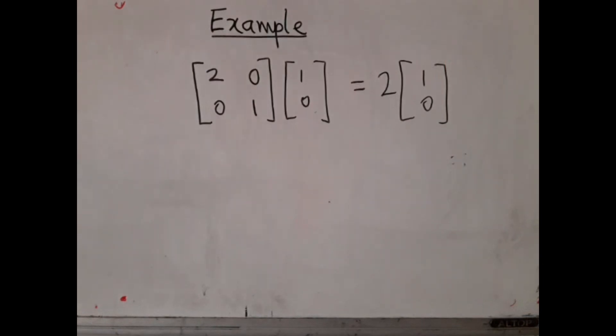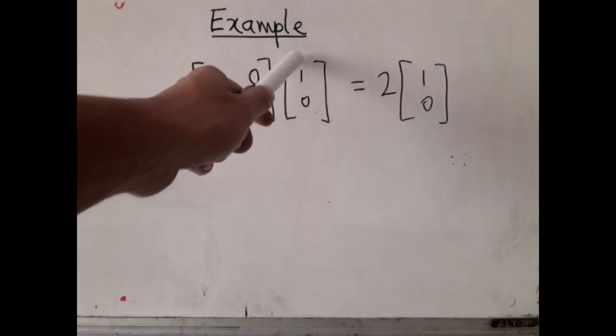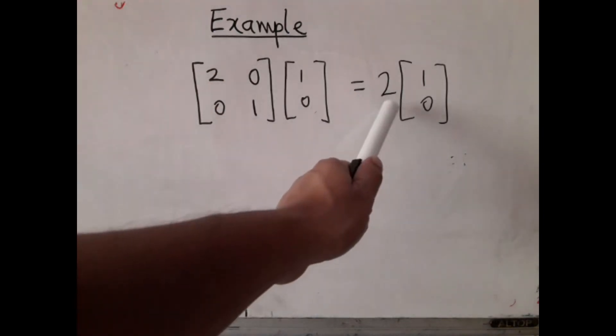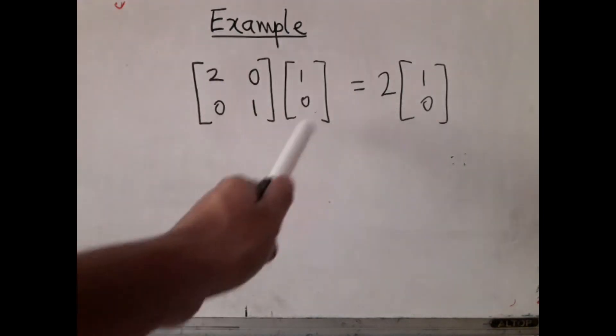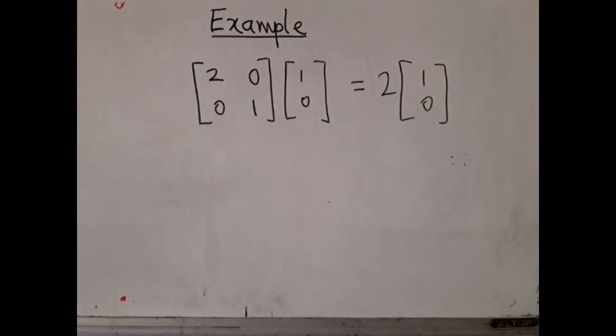Here is one example. Suppose I take my matrix A as 2, 0, 0, 1. In that case, 1, 0 is an eigenvector corresponding to the eigenvalue 2. If I do the multiplication, you will see that this will be 2, 0, which is 2 times 1, 0.